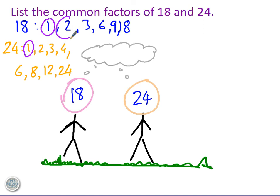What else do they have in common? 2, I can see in both of these lists. I can see 3 in both of these lists. And I can see 6. So in that case the common factors of 18 and 24 are 1, 2, 3 and 6. These 4 numbers both go into 18 and 24.